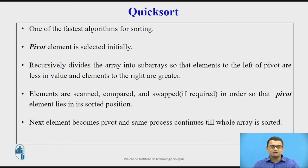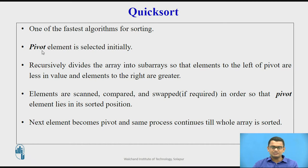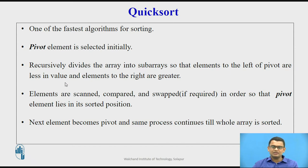Talking about quick sort, this algorithm is one of the fastest algorithms available to sort given data. In quick sort, an element called the pivot is selected — usually this is the element at the first position. Based on the position and value of this pivot element, the array is divided into sub-arrays: elements to the left of the pivot are less in value than the pivot, and elements to the right are greater than the pivot.